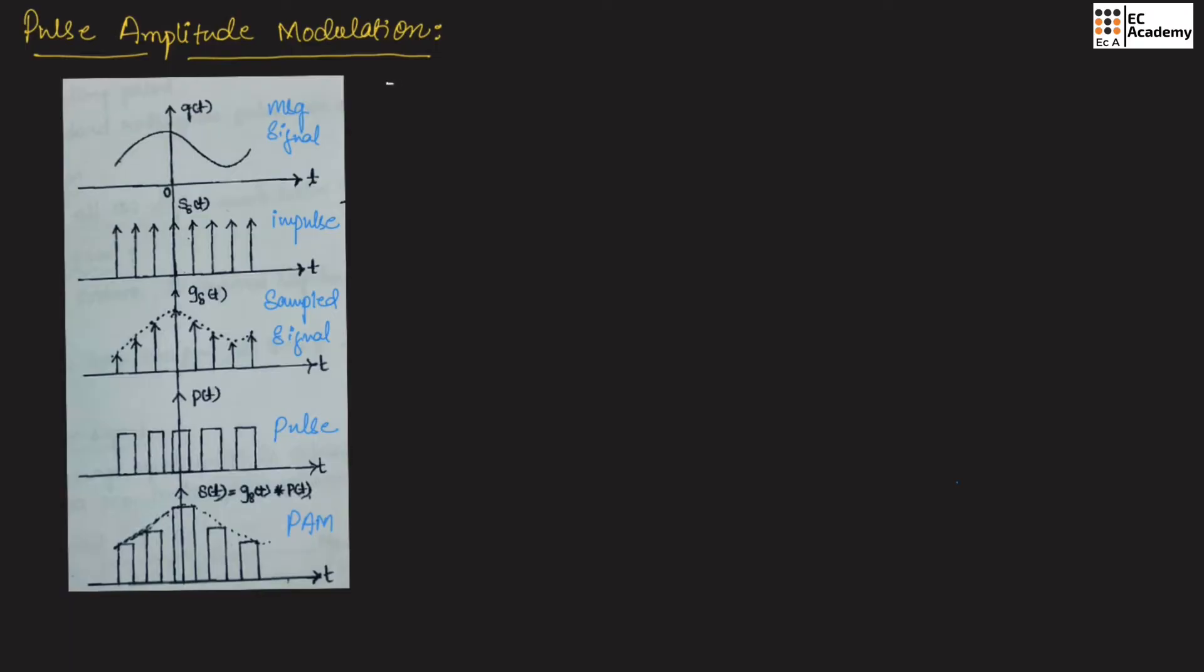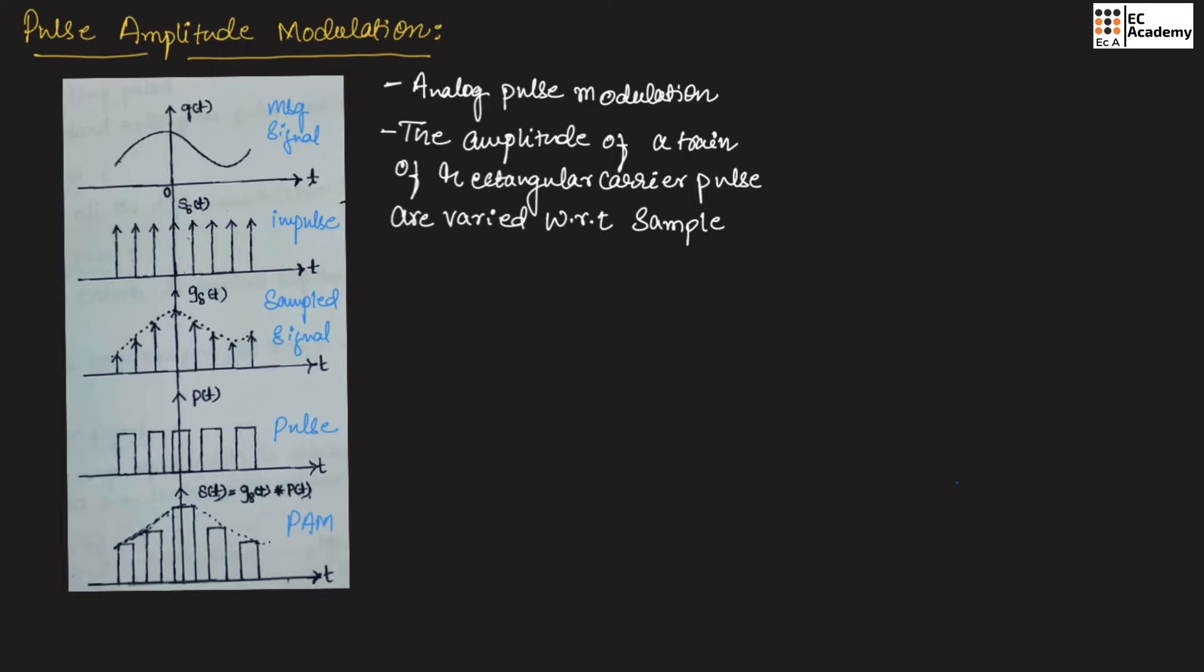Pulse amplitude modulation is an analog pulse modulation scheme in which the amplitude of a train of rectangular carrier pulses are varied with respect to sample value of modulating signal.